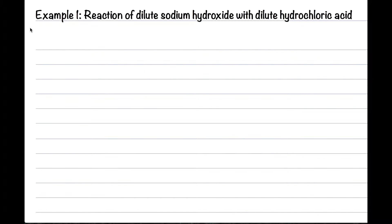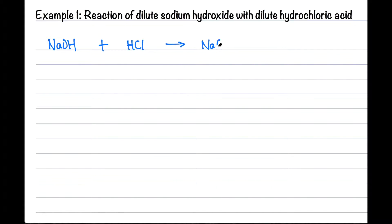Now let us look at a very simple example: the reaction of dilute sodium hydroxide with dilute hydrochloric acid. The first step is to convert the word equation into a chemical equation, so let us replace the chemicals with their chemical formula. Then we check if the equation is balanced.